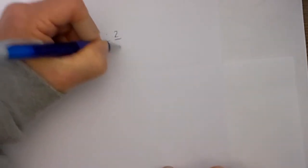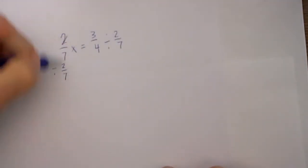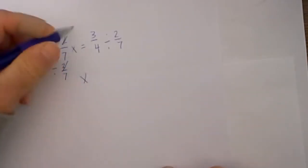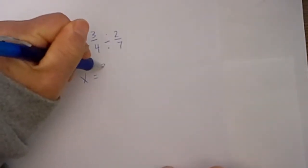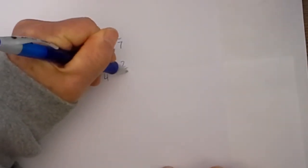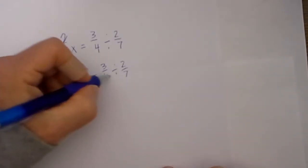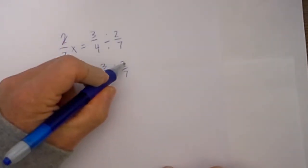So now we have 3/4 divided by 2/7 on the other side. The 2/7 will cancel and we are left with x equals 3/4 divided by 2/7. A trick to dividing fractions is to keep, change, and flip.